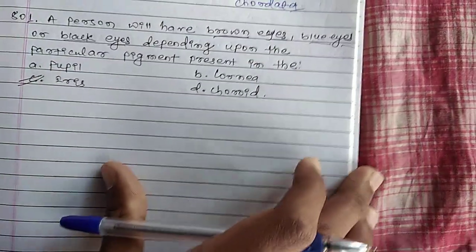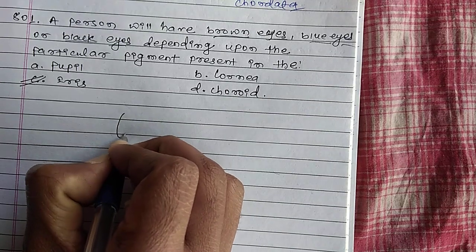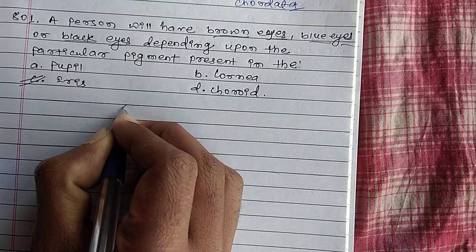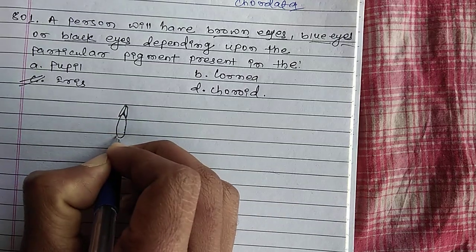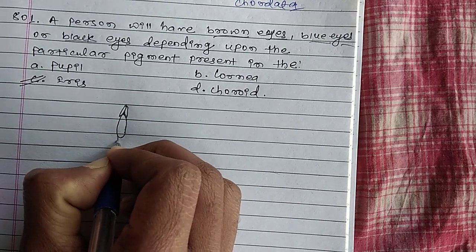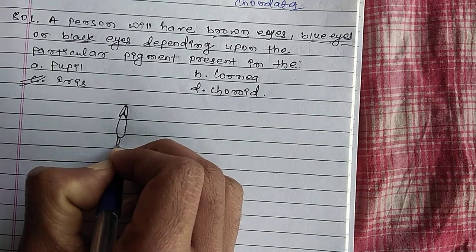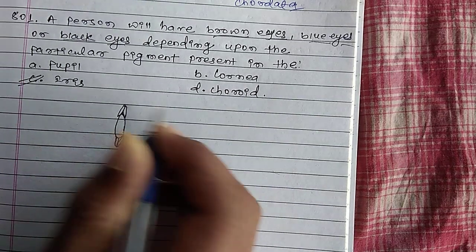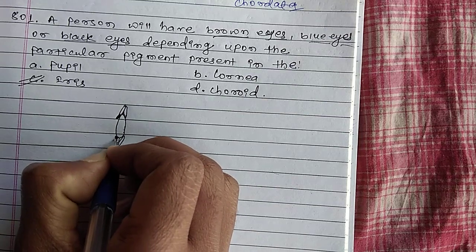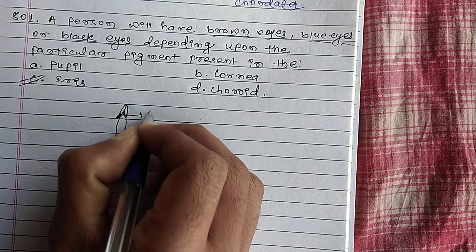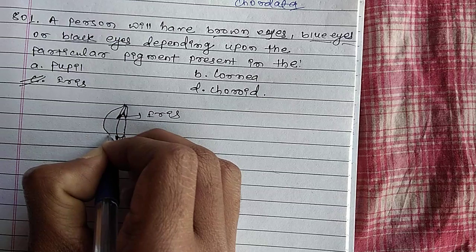I will show you. This is the lens. This is the ciliary body. This is the front part of the ciliary muscle extending. This is the iris. This is the cornea.